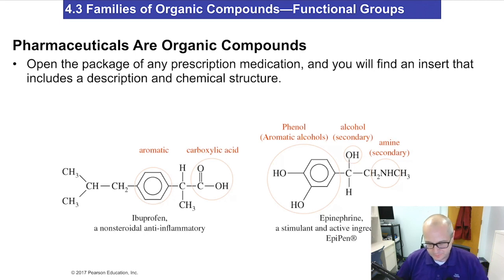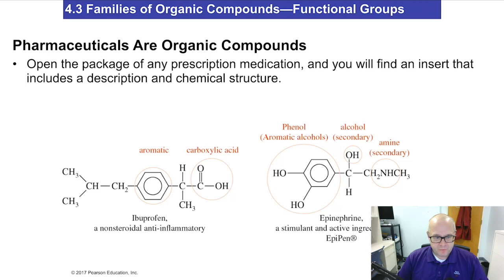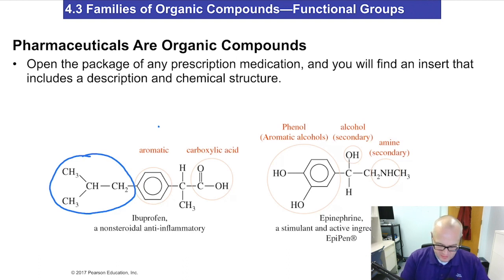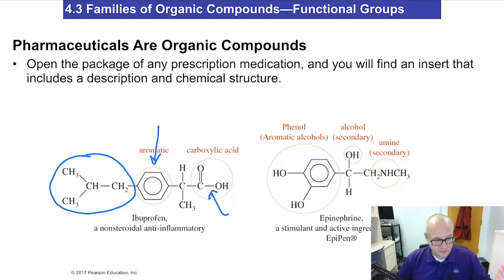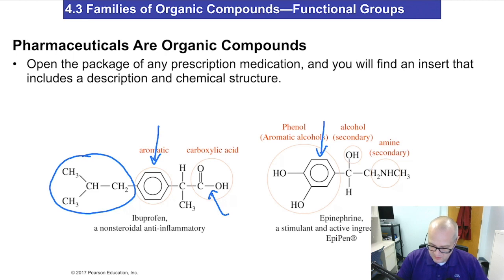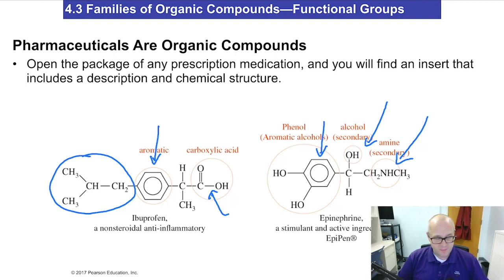As a quick aside, here are a couple of very common pharmaceuticals. Look at ibuprofen: over here we have an alkane, that part is aromatic, and up in here is a carboxylic acid — so it's got three families of compounds in one. It's a very common anti-inflammatory agent. Epinephrine has an aromatic ring, those aromatic alcohols are called phenols, here we have an alcohol, and here we have an amine. A lot of these molecules have numerous families of compounds and make up drugs we use every day.